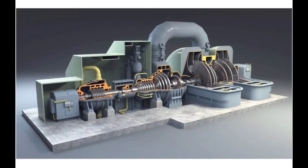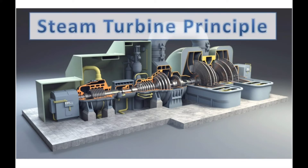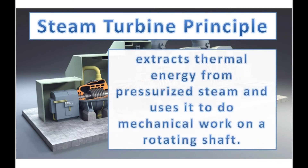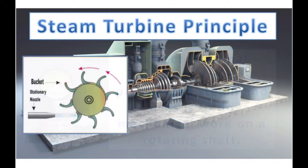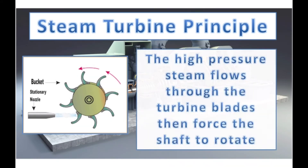But how does the marine steam turbine work as a prime mover and a driver to the rotating machineries on board ships? To create a rotating motion of the turbine shaft, the steam turbine needs an external force to do mechanical work. As the name suggests, the turbine uses the energy of the steam produced by the boiler, by extracting the thermal energy from pressurized steam and converting it into a mechanical rotating motion.